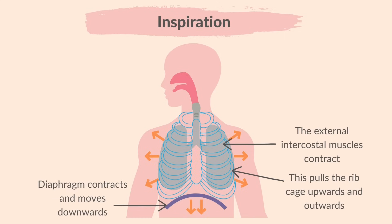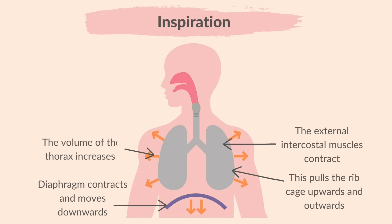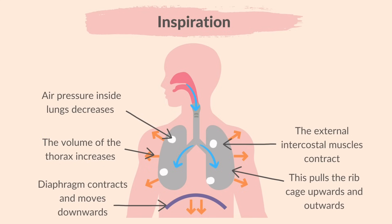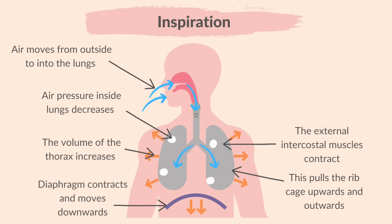The diaphragm, which is dome-shaped when relaxed, contracts and moves downwards, flattening. Both of these factors cause the volume of the thorax — basically the chest area — to increase. When the volume of the thorax increases, the air pressure inside the lungs decreases, because the force exerted by gas molecules against the walls is lower since there's more space. Therefore, pressure inside the lungs is lower compared to the surrounding air, and air moves into the lungs from outside.